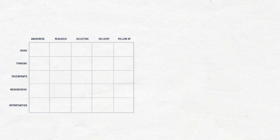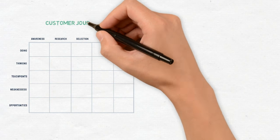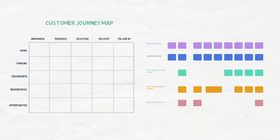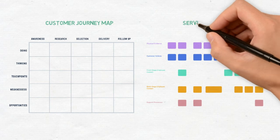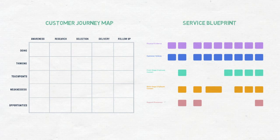The service blueprint is the next step after the customer journey map. It is especially vital to construct a service blueprint with a complex business where there are many different systems, people, and things that operate together. The customer journey is one part of the puzzle, and the service blueprint aims to build the full picture.